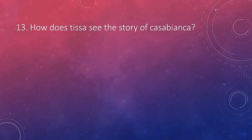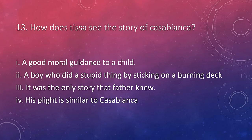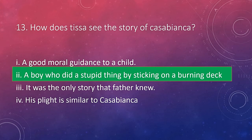Question number 13: how does Thyssa see the story of Casabianca? The story of Casabianca is a moral story. During a voyage, a father instructed Casabianca, a small boy, to stay in one place until his father arrived. A fire broke out on the ship and the father could not make his way back. Casabianca did not run away and stood his ground as his father had instructed, and finally he was killed by the fire. Thyssa, as a rational boy, is doubtful about some acts and advice of parents. He believes Casabianca acted foolishly by blindly following his father's advice. The answer is: a boy who did a stupid thing by sticking to the burning ship.